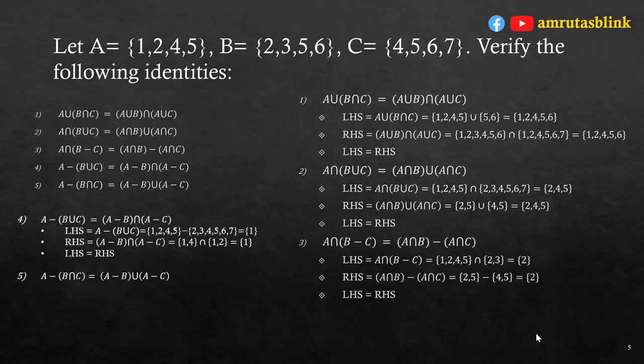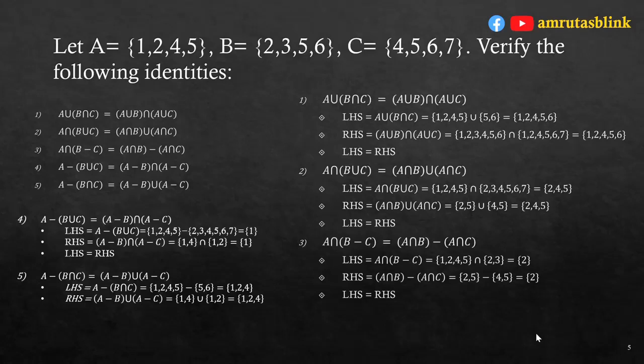For the fifth identity: A-(B∩C) = (A-B)∪(A-C). LHS: B∩C = {5,6}, so A-(B∩C) = {1,2,4,5} minus {5,6} = {1,2,4}. RHS also gives {1,2,4}, so LHS equals RHS and the fifth identity is verified.